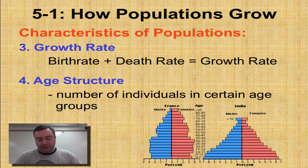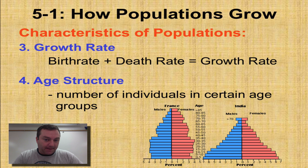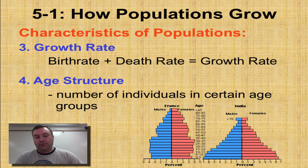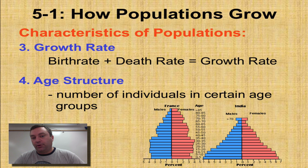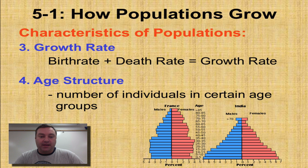The third characteristic is the growth rate. Growth rate is equal to the birth rate plus the death rate — remember the death rate is a negative number. So if your growth rate is positive, the birth rate is higher than the death rate. If the growth rate is negative, the death rate is higher than the birth rate.